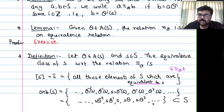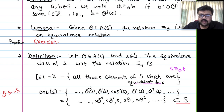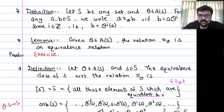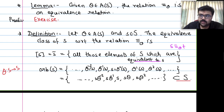Going back to the example: if S = {1,2,...,7} and theta is our permutation, taking s = 1, orbit of 1 = {1, 2, 4}. Since 2 = theta(1), 4 = theta^2(1), we see that 1, 2, and 4 are all equivalent. This equivalence class is exactly the orbit of 1.